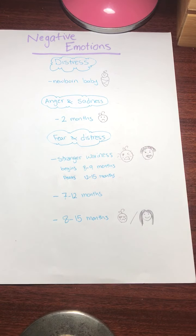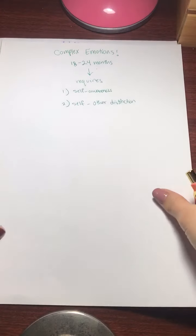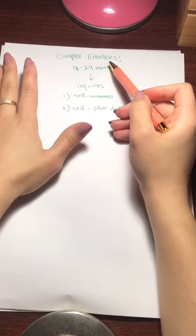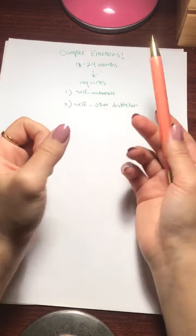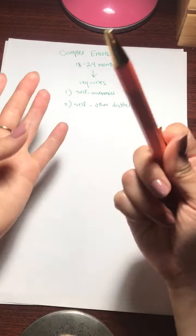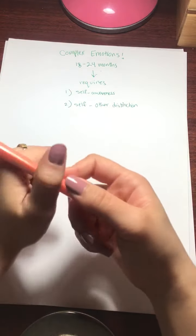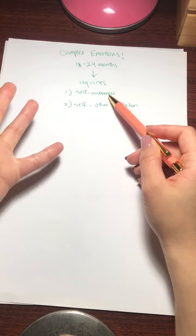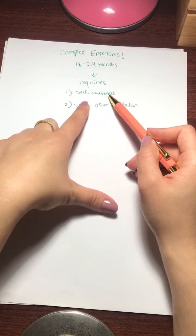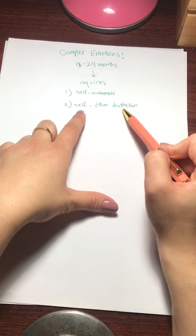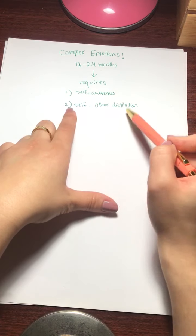And next we're going to talk about something called complex emotions, which is the next level of emotions. Pretty much complex emotions are emotions like shame, guilt, envy, pride, or embarrassment. As you notice things like shame and pride, things like that, they require the baby to be self-aware and also to have self-other distinction, self-awareness and self-other distinction.